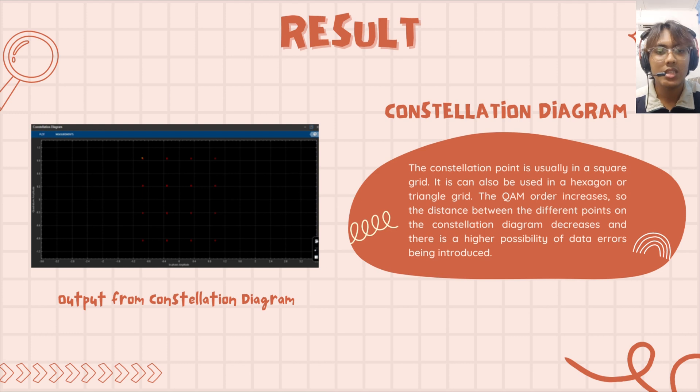Next result is the constellation diagram. As shown, this is the output from the constellation diagram. The constellation points are usually in a square grid. It can also be used in a hexagon or triangle grid. As the QAM order increases, the distance between the different points on the constellation diagram decreases and there is a higher possibility of data errors being introduced.